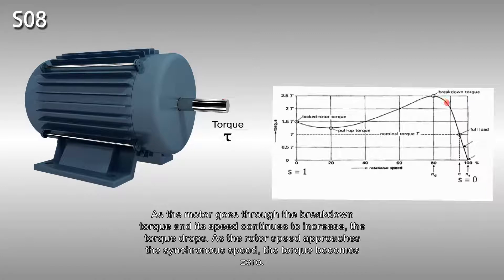As the motor goes through the breakdown torque and its speed continues to increase, the torque drops. As the rotor speed approaches the synchronous speed, the torque becomes zero.